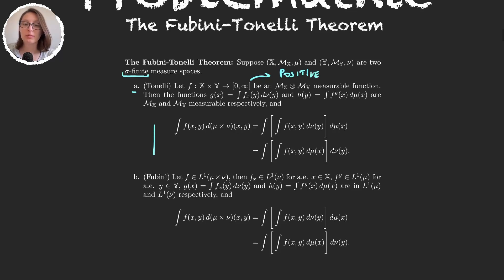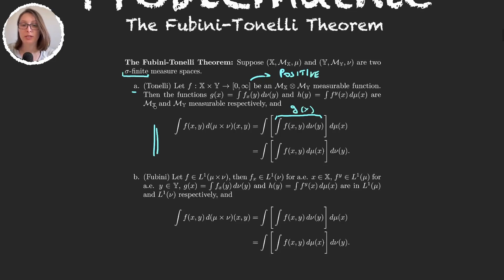The most important part of the theorem says: if you want to integrate your function with respect to the product measure — remember f is in the product space — that will be the same as first integrating with respect to measure mu over y, which gives a function of x (that's what we called g of x), and then integrating g of x with respect to mu. So you can split the integral into two: first integrate with respect to one measure, then with respect to the other. The second equality is the reversed one: you can also first integrate with respect to mu, giving h of y, and then integrate h with respect to the measure nu.